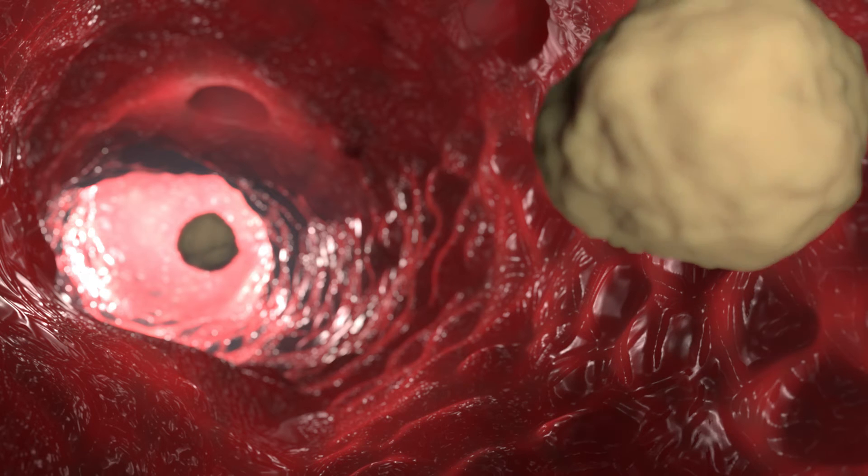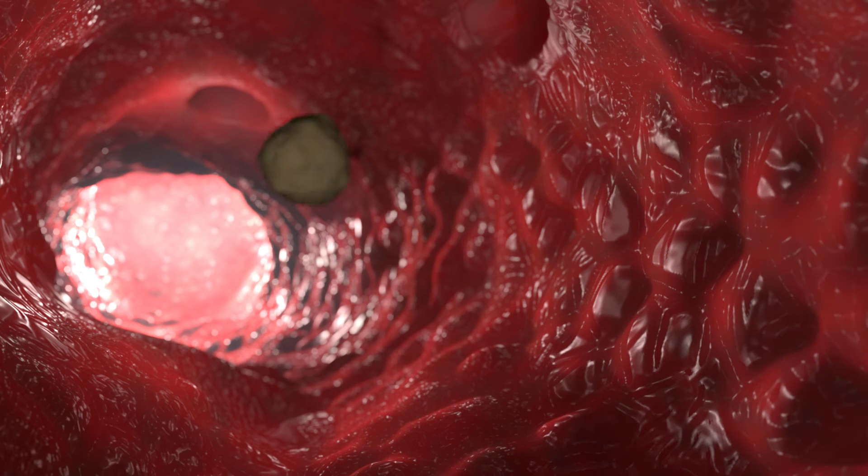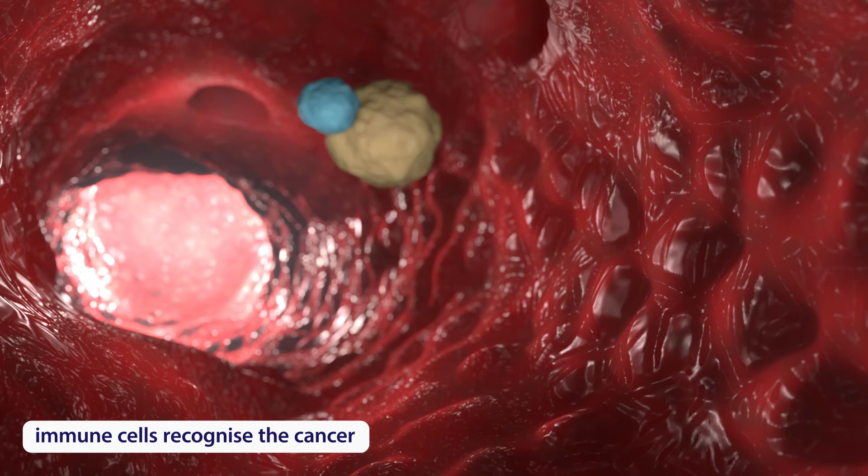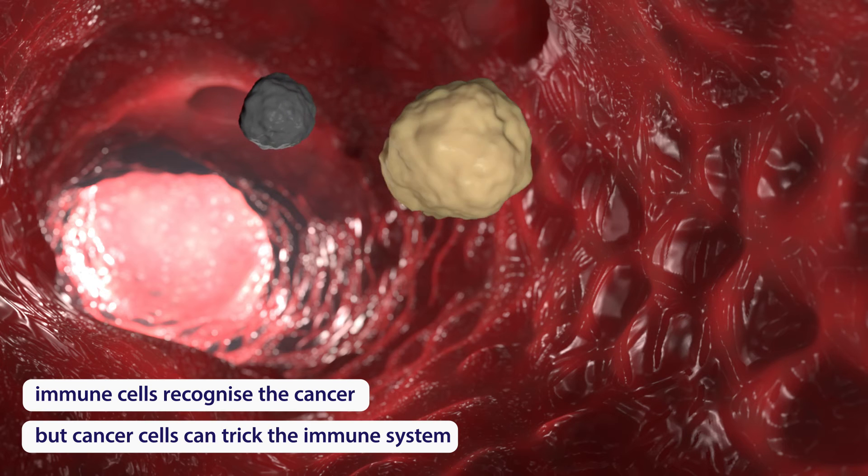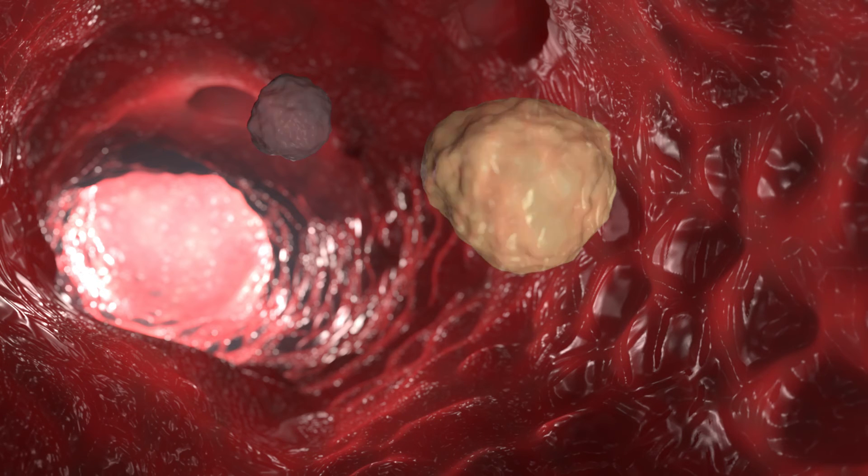Instead, they use different therapeutic tactics. One way is to use the immune system, which can recognize the cancer cells and wants to attack them. But leukemias and lymphomas can trick the healthy immune system so that it does not attack the cancer.